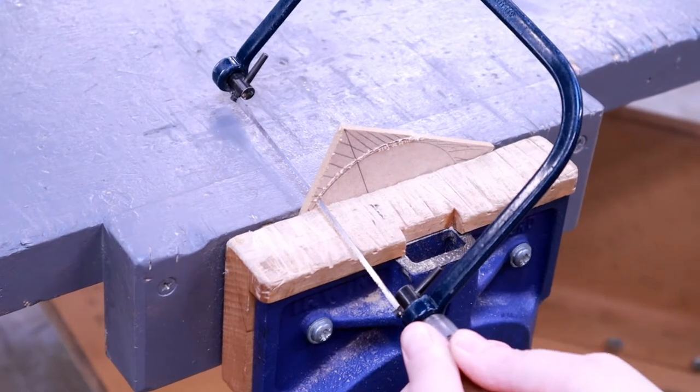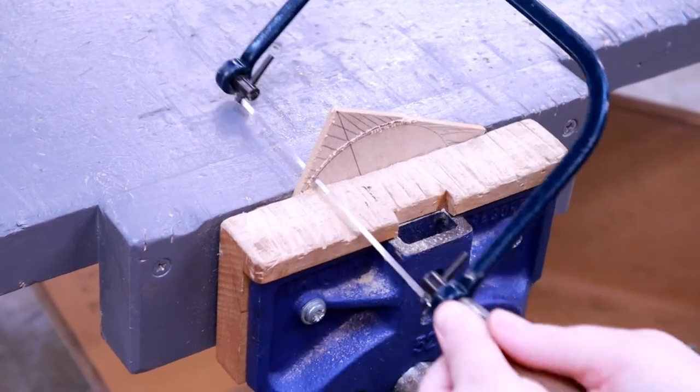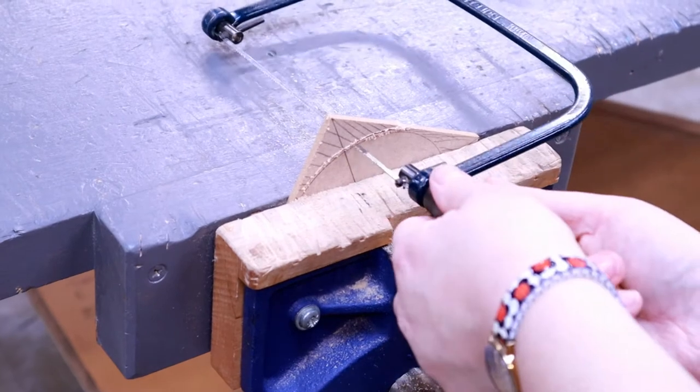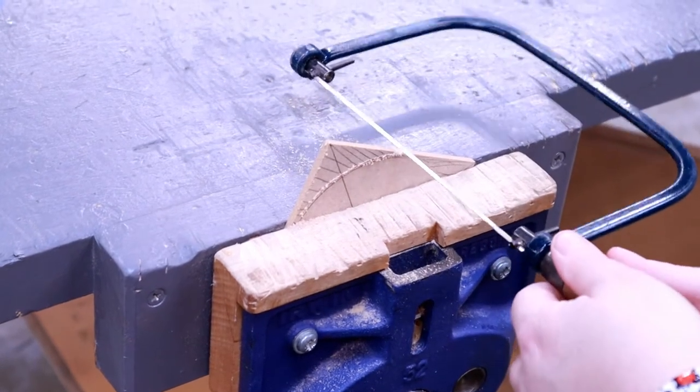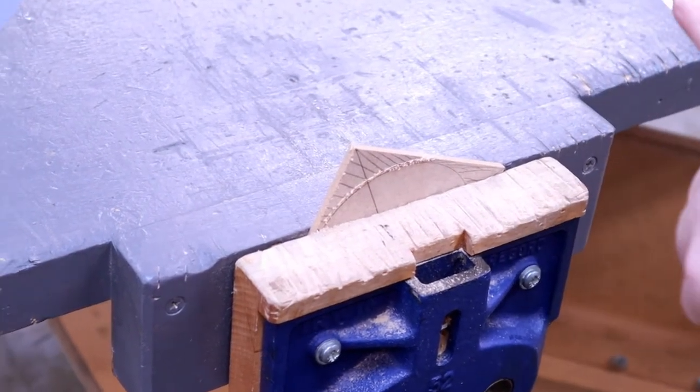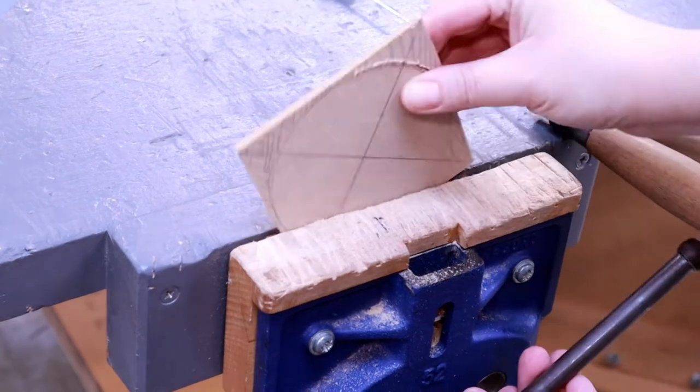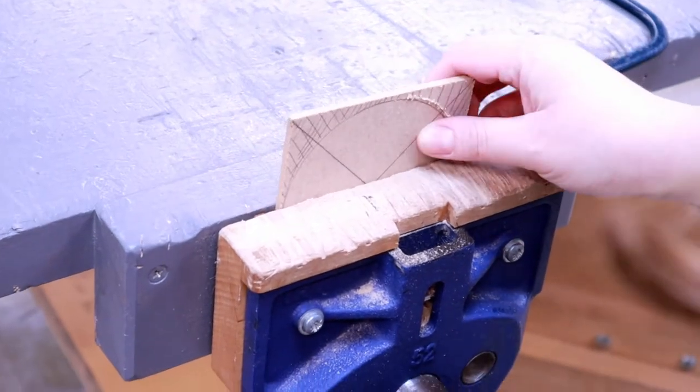Now because I've run out of space, what I do need to do is start sawing again, but bringing it out backwards. If I were just to pull it out, it could be that the blade snaps. Then you need to turn your work around and continue.